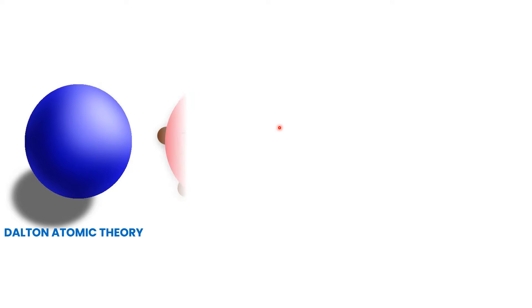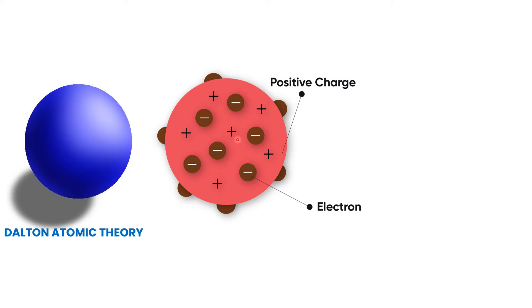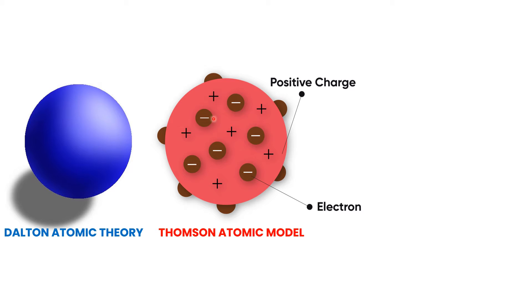However, in 1897, J.J. Thomson discovered electrons by using cathode ray tube experiments. According to J.J. Thomson, an atom is not the smallest particle of matter, but rather an atom consists of other small particles, and these particles are known as electrons. Electrons are thoroughly embedded inside the atom and they act like plums in a pudding.